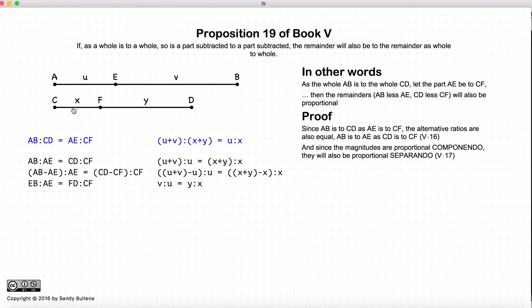So we take AB minus AE compared to AE will be equal to CD minus CF compared to CF. This comes from Proposition 17.